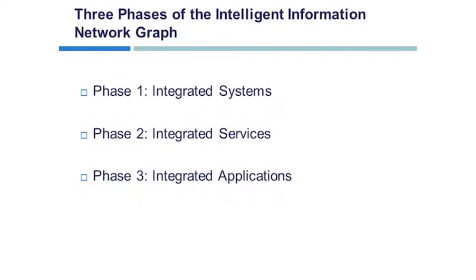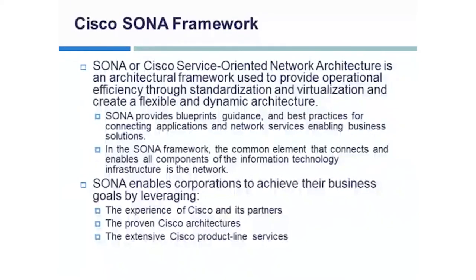Reviewing the three phases of the Intelligent Information Network: Phase 1, Integrated Systems — the intelligent movement of data, voice, and video across systems of networks. Phase 2, Integrated Services — virtualized networking resources. Phase 3, Integrated Applications — application-aware networking services. Cisco's SONA Framework is an architectural framework that guides the evolution of enterprise networks to an IIN. It provides several advantages: it outlines the path towards the IIN, illustrates how to build integrated systems across a fully converged IIN, and improves flexibility and increases efficiency, resulting in optimized applications, processes, and resources.